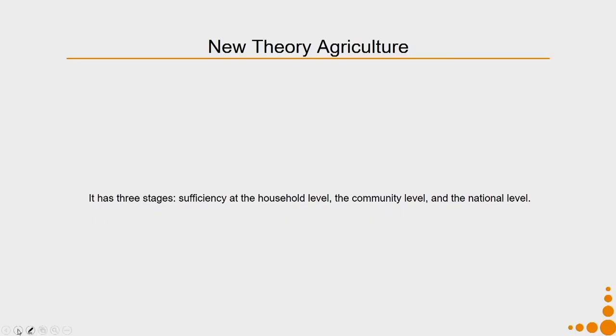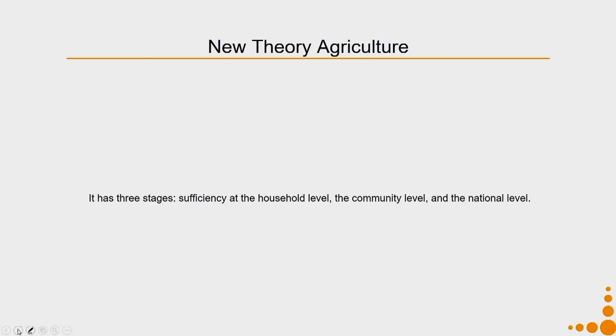The next example is called new theory agriculture. This particular technique was experimented and perfected by the king himself in his own palace fields and then disseminated to the people of Thailand. This particular theory has three stages: sufficiency at the household level, the community level, and the national level.